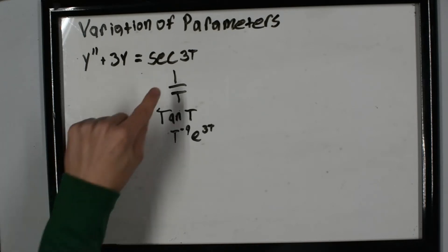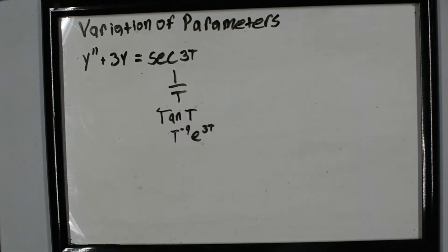You also want to use it when you have an inverse of a variable. Before we used it when it was t, t^9, t^4. When it's 1/t, 1/t^4, you need to use variation of parameters.